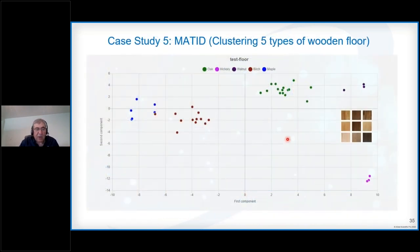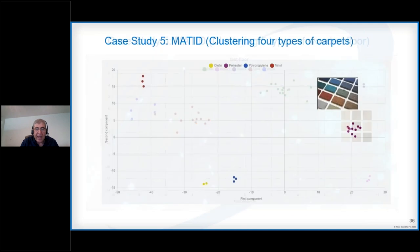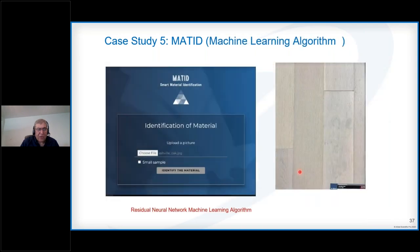This was also used for material identification. In the case of test floors, similar models were built for wooden surfaces, hardwood surfaces, and also for carpets. This all has applications for identifying different materials on the surface. They have also used machine learning algorithms to identify different surfaces. Our cloud is capable of doing that. This is an example where residual network neural network machine learning algorithm was used to identify a hardwood surface.